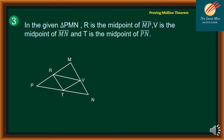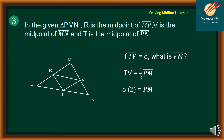Problem 3: In triangle PMN, R is the midpoint of MP, B is the midpoint of MN, and T is the midpoint of PN. If TB is equal to 8, what is PN? Since BT equals one-half PN, substitute: 8 equals one-half PN. Multiplying both sides by 2, we get PN equals 16 units.